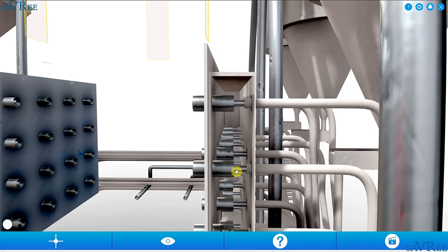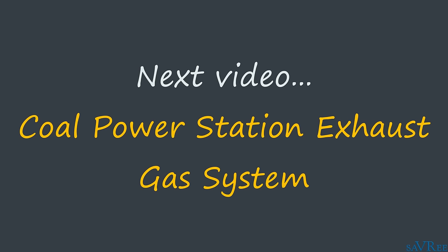We have two main air systems associated with the water tube boiler. That is primary air and secondary air. If you haven't watched any of our other videos in the coal-fired power station series, then you should definitely check those out. I'll put the link in the video description area.